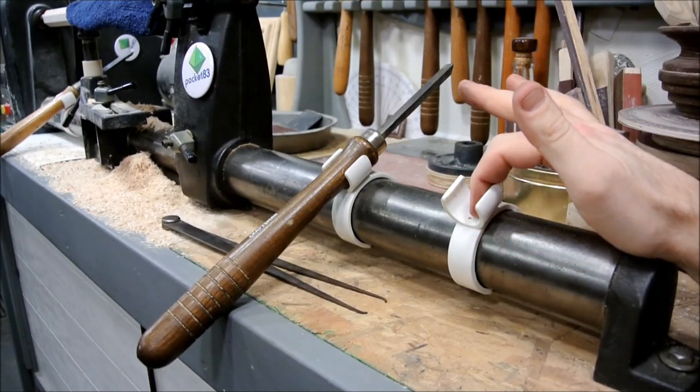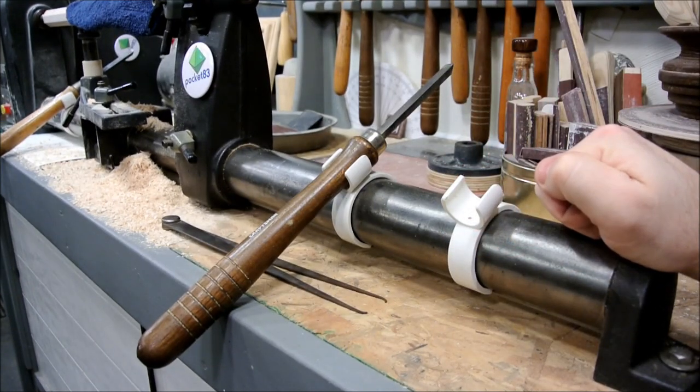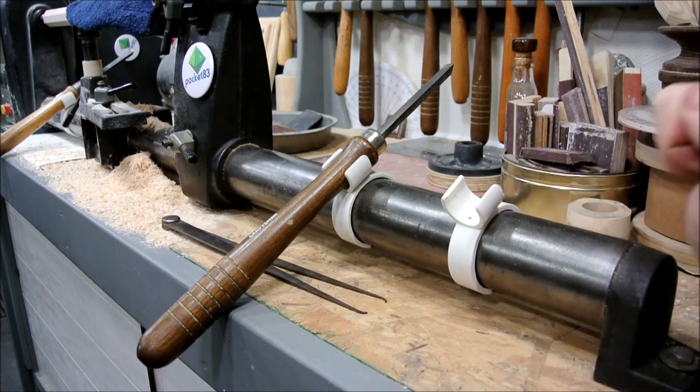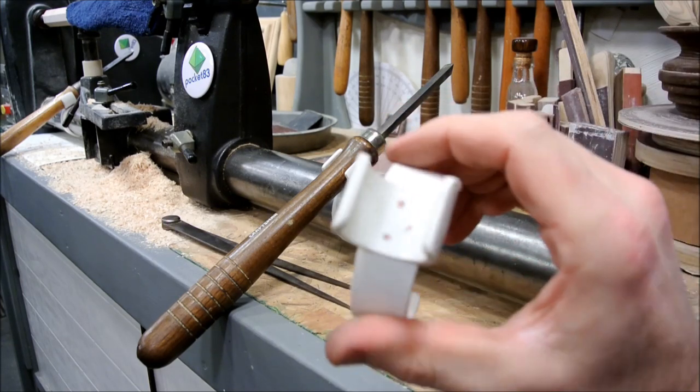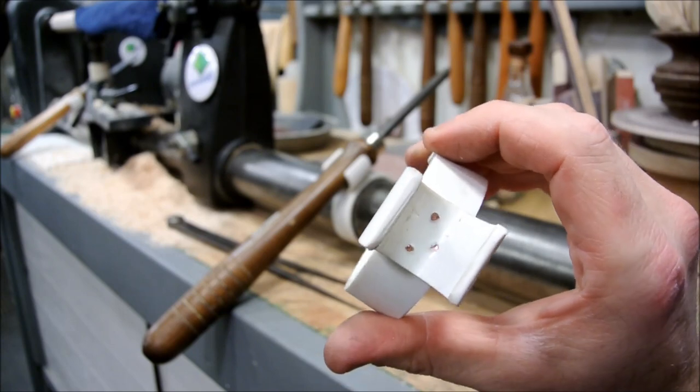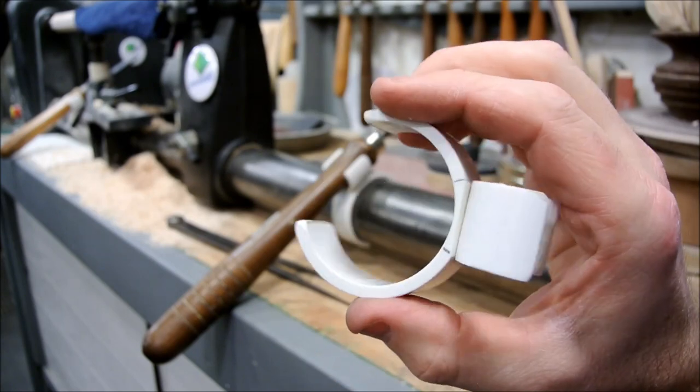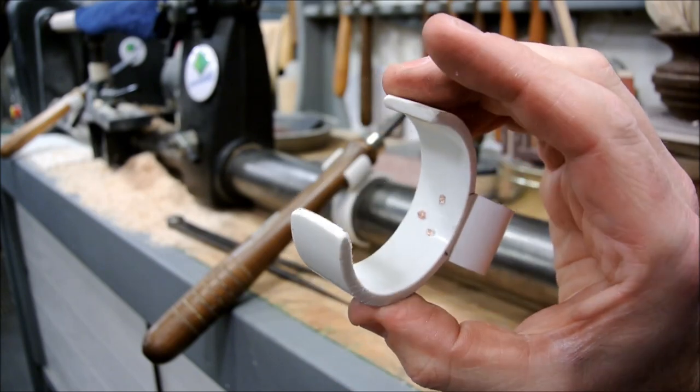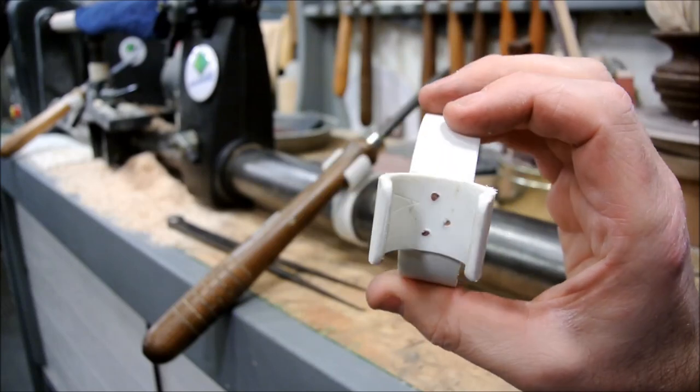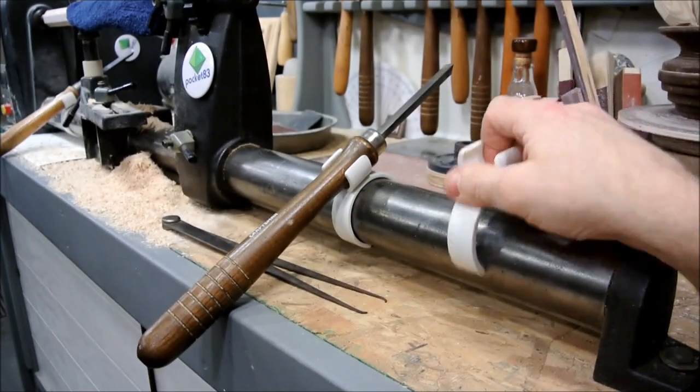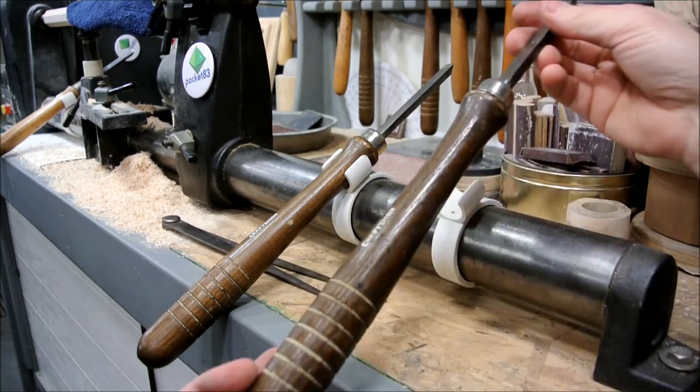So what I did was I riveted them together with copper wiring. I'll show you how to do that, because that is an awesome joining process for those types of materials that just don't fasten easily. This is a great application for that.